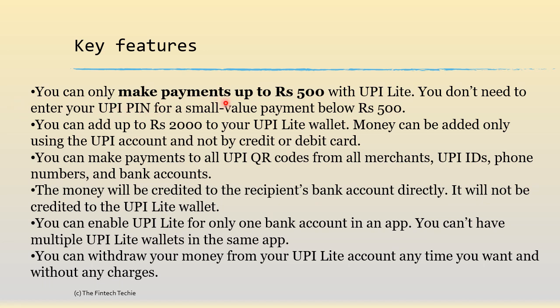Some key features: You can make payments up to 500 rupees — it was 200 and has been increased. You can add up to 2,000 rupees to your UPI Lite wallet. Remember, this wallet is different from other wallets like a Paytm wallet or a Mobikwik wallet because this is not a PPI or prepaid instrument. So you don't have to enter a PIN or a UPI PIN to initiate a transaction. You can use any UPI QR code just like a normal UPI payment. The money will be credited to the recipient's bank account directly — it will not be credited to the UPI Lite wallet. This is important. Even if the receiver had a wallet, the credit will always go to their bank account. You can enable UPI Lite for only one account in an app, and you can withdraw your money from UPI Lite anytime you want without any charges.